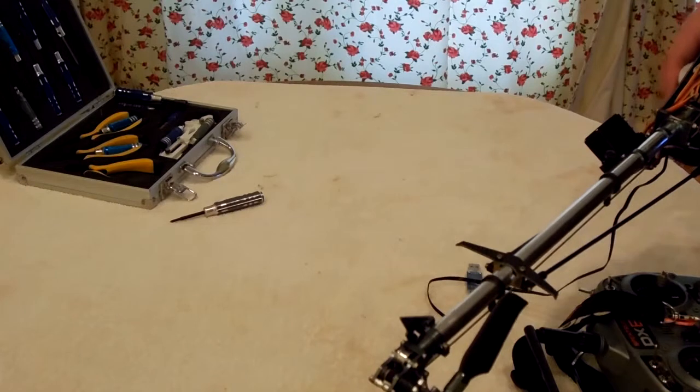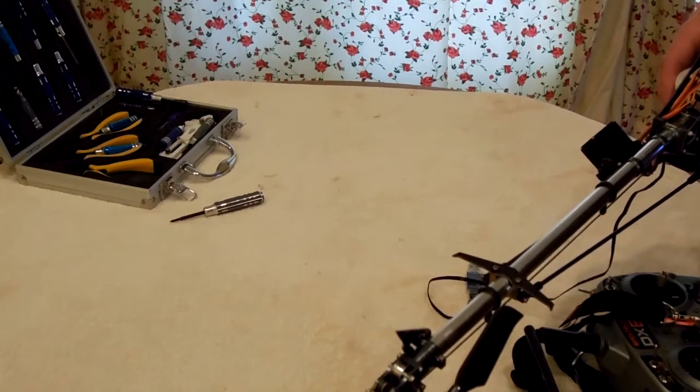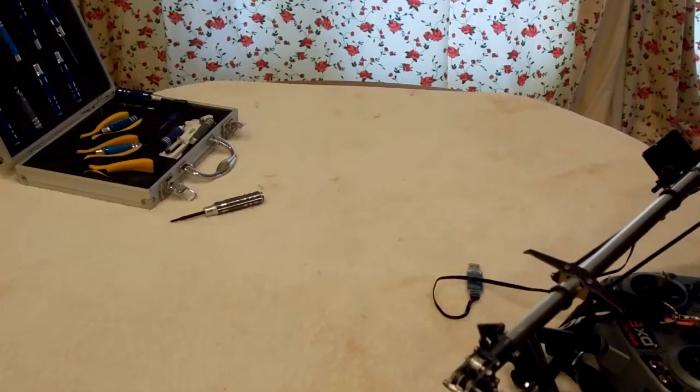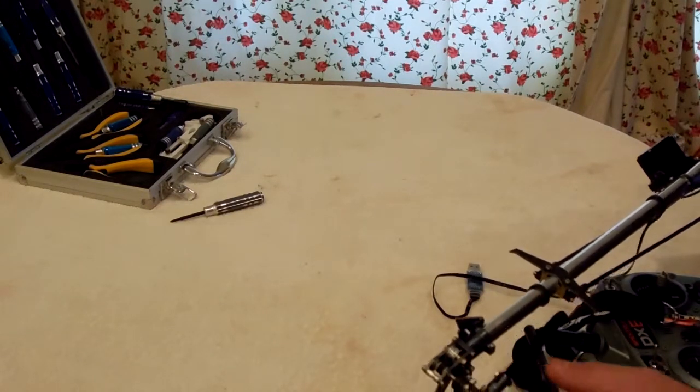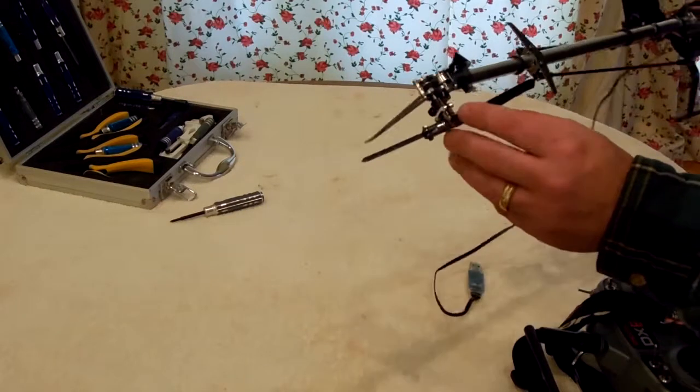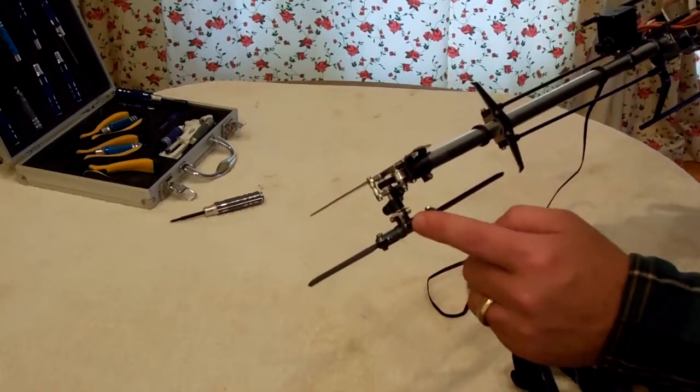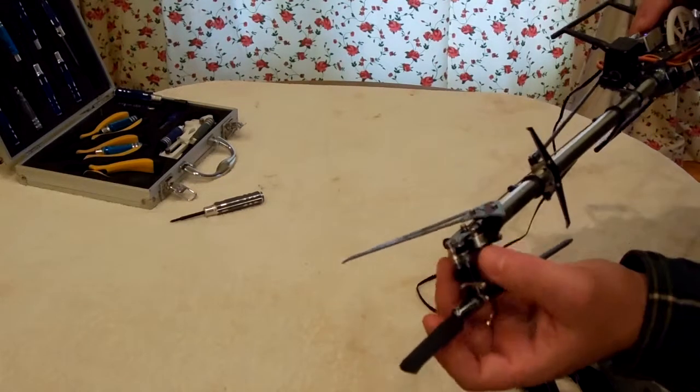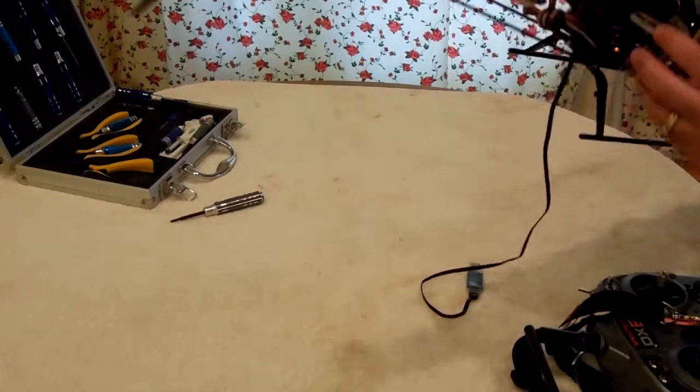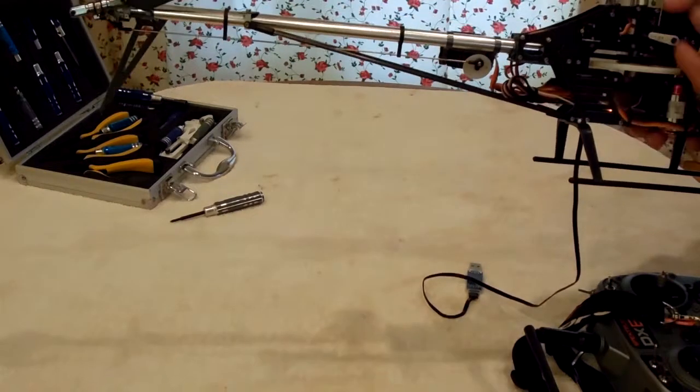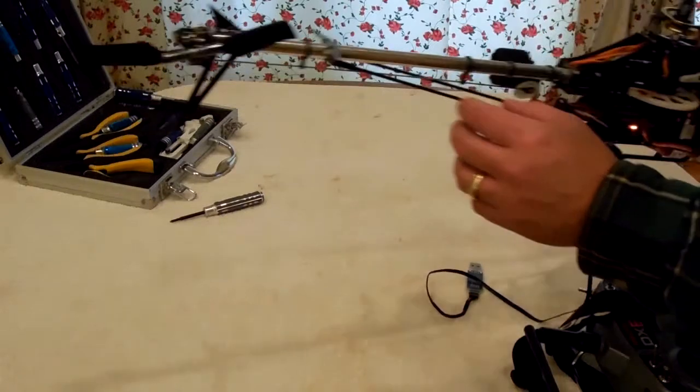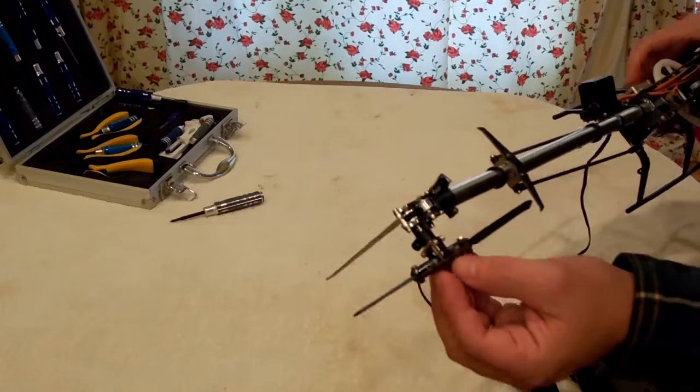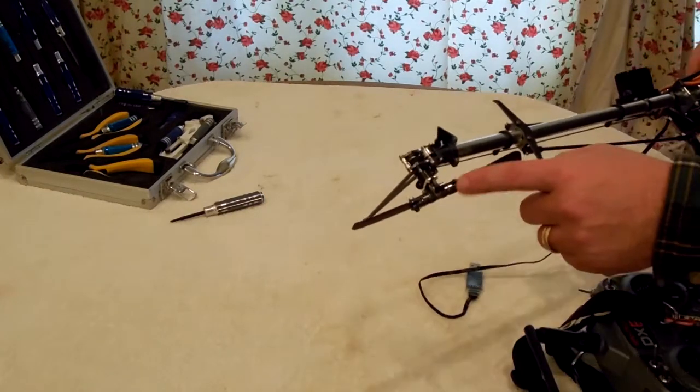It very rarely comes with thread lock already in place, so what you want to do is make sure you put thread lock on the grub screw. Just take it off and put it back. And you should be doing that on all of these anyway. I showed you earlier that I put thread lock on all of these screws on the frame, but I did that too on the tail case. I took every single little screw out, put a little thread lock, and put it back.